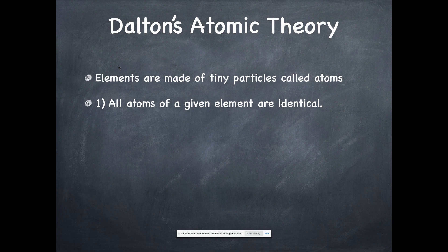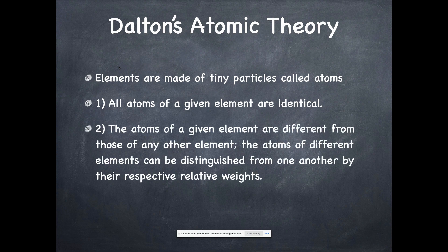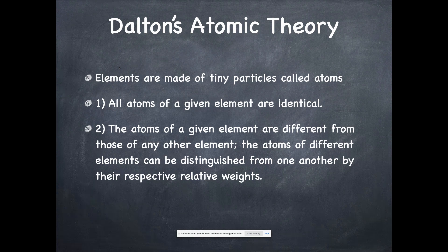The first statement is all atoms of a given element are identical. If I have a carbon atom and you have a carbon atom, there is really no way to tell them apart. The second statement is that the atoms of a given element are different from those of any other element. The atoms of different elements can be distinguished from one another by their respective relative weights. This statement is not 100% true. We now know that you can have carbon atoms that are different from other carbon atoms. There's still carbon atoms, but we have these things called isotopes with different masses. At one point we actually thought different isotopes were different elements.